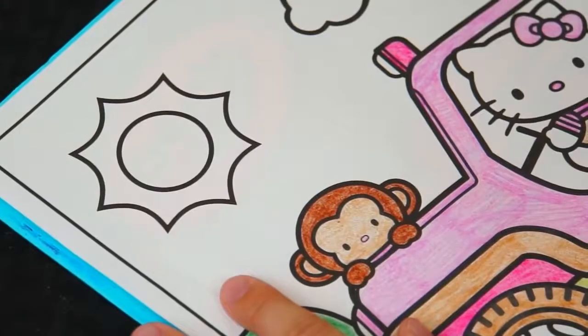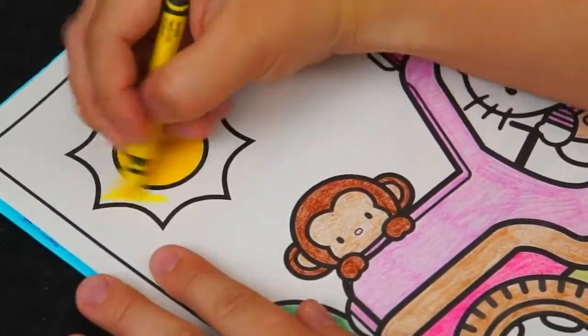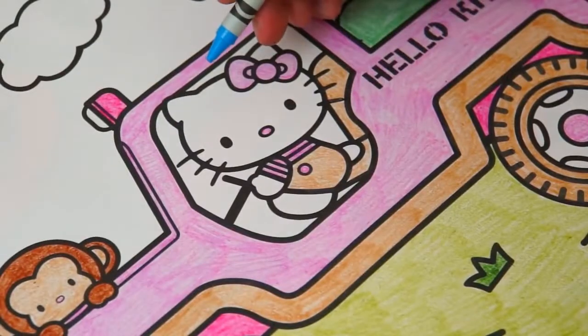And let's color in the rest of the ground with an olive green. Let's color in the sunshine bright yellow and let's color in the sky light blue.